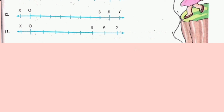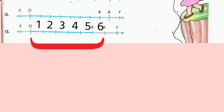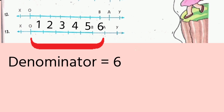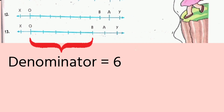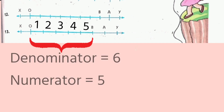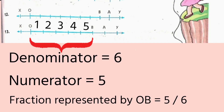Question number 13. Again, the number line XY is there. On this number line, point O and point A are there. Let us find out in how many parts OA is divided: 1, 2, 3, 4, 5, 6. Therefore OA is divided into 6 equal parts, so our denominator will be 6. How many parts are represented by OB? 1, 2, 3, 4, 5. Our numerator will be 5. Therefore, the fraction represented by OB on this number line will be 5 by 6.